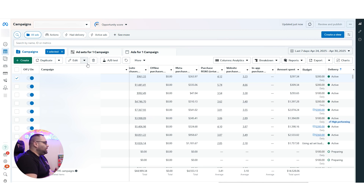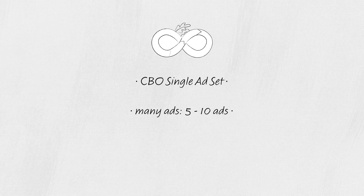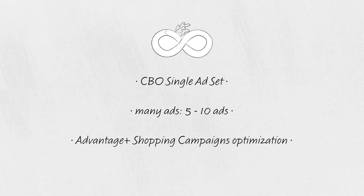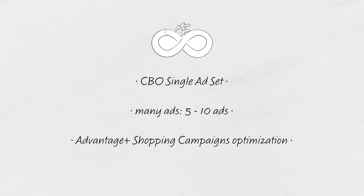That's all — I don't want to make this video really big. This is a pretty small update video. This is what I'm using right now: CBO, single ad set, many ads — five to ten, whatever — and optimizing the way we used to optimize the Advantage Shopping campaigns. This is what I'm going to follow for now.